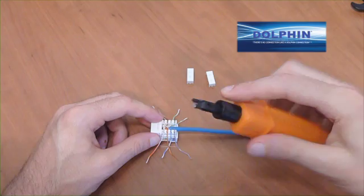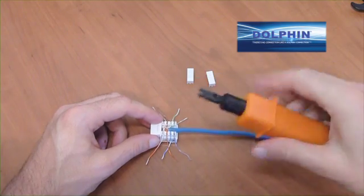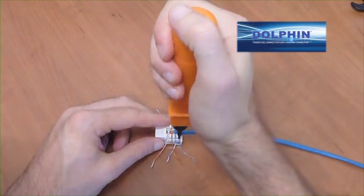Using the punch down tool with the cutting edge on the outside edge of the jack, punch wire down into the teeth and the tool will cut off the excess wire.